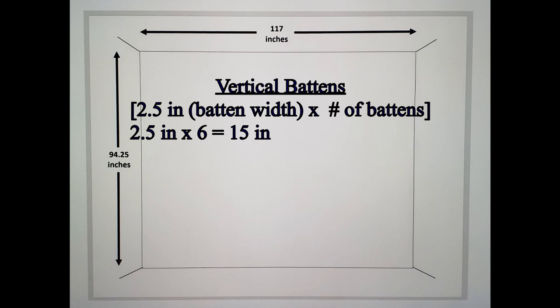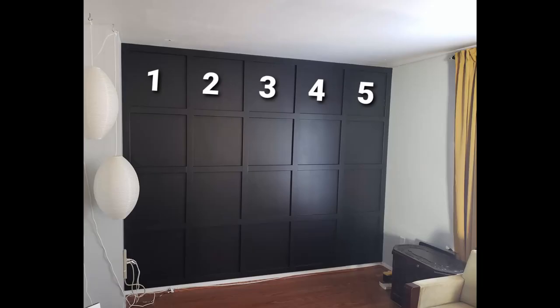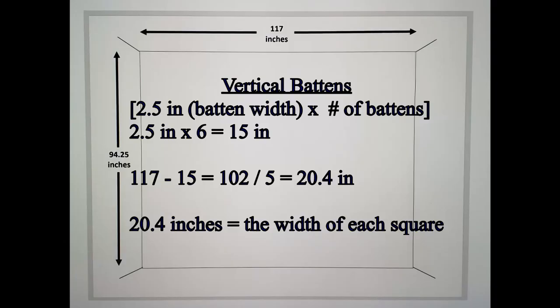All right next I took the entire width of my wall which was 117 inches. I subtracted the 15 from that, that gave me 102 inches. Now that is the empty space on the wall or the squares. I took the 102 divided by five, those are the number of squares I was going to have on the wall, and that gave me 20.4 inches. That is the individual width of each square on the wall.